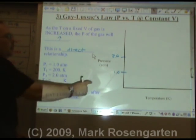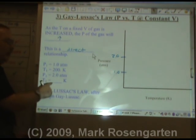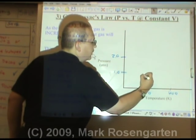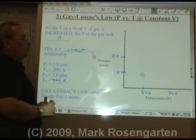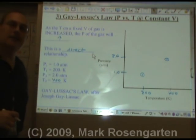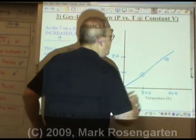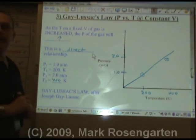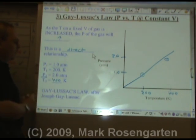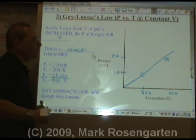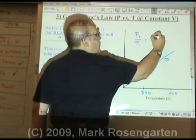Just like Charles' law, this is a direct relationship. To double the pressure from 1 atmosphere to 2 atmospheres, you double the temperature from 200 Kelvin to 400 Kelvin. At 200 Kelvin it only exerts 1 atmosphere of pressure, but if you double the temperature the molecules on average will be moving twice as fast and therefore exert twice as much force when they bounce off the container wall, doubling the pressure. Because this is a direct relationship, the equation is P1 over T1 equals P2 over T2.